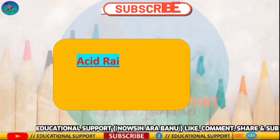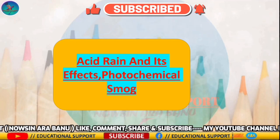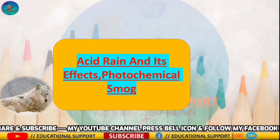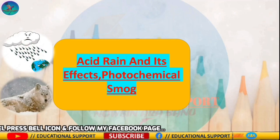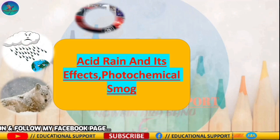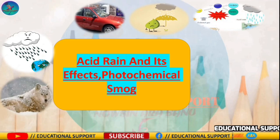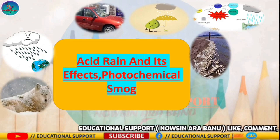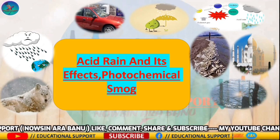Hello everyone. Today's topic is acid rain and its effects, and photochemical smog. In this class, we will learn what is the phenomenon, what are the forms of acid deposition, causes of acid rain, what are the sequences of photochemical reactions in smog formation, and mainly what can we do to stop acid rain.